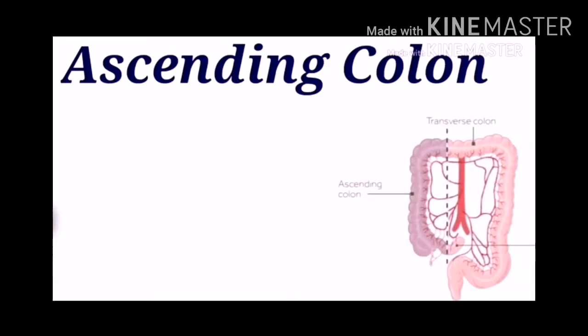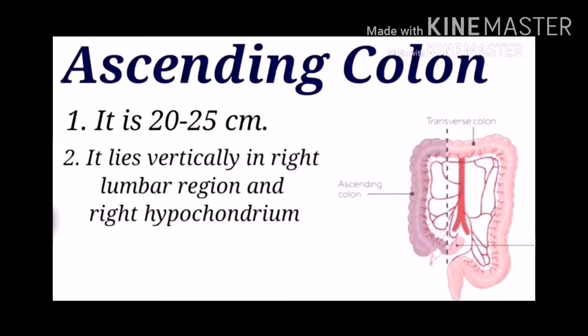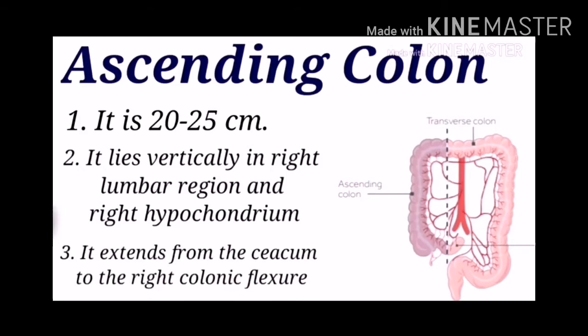The second part is the ascending colon, which is 20 to 25 centimeters. It lies vertically, occupying the right iliac and the right lumbar region, and extends from the cecum to the right colonic flexure, which is called the hepatic flexure.